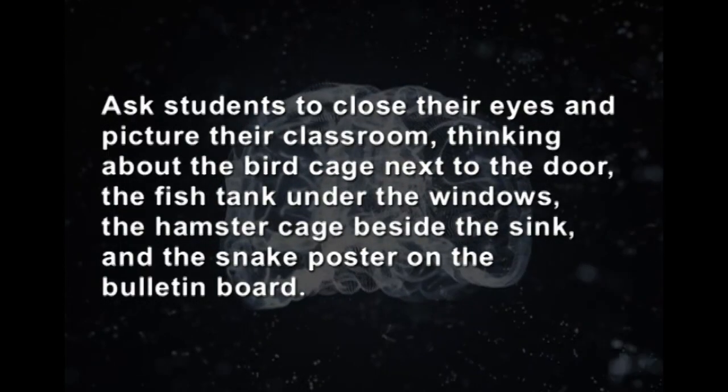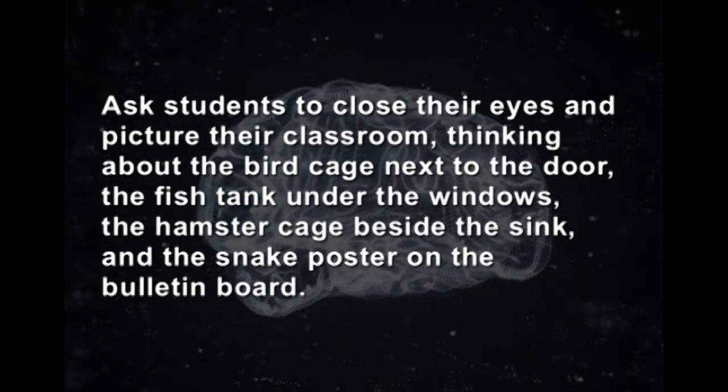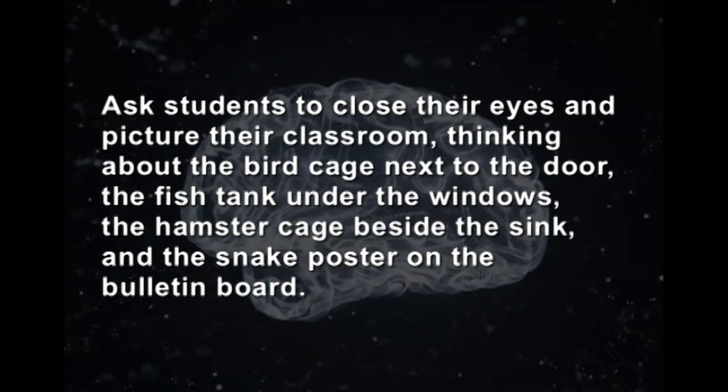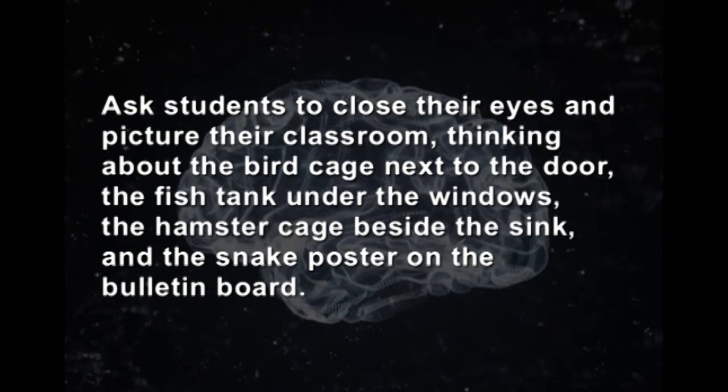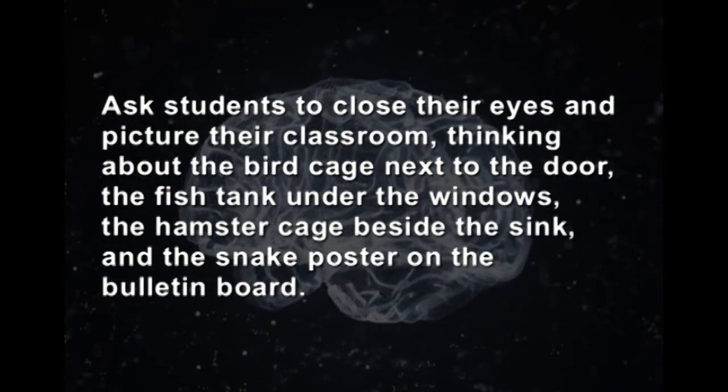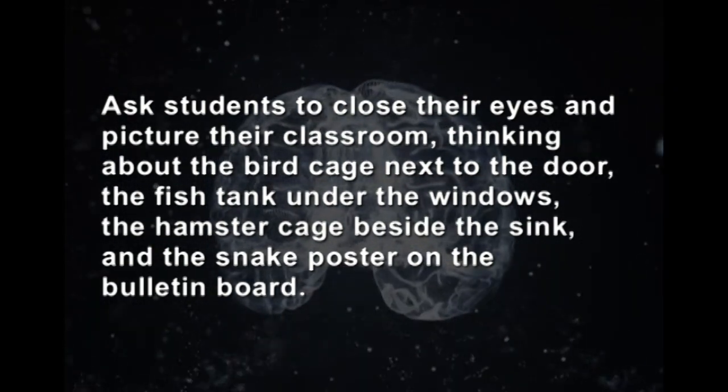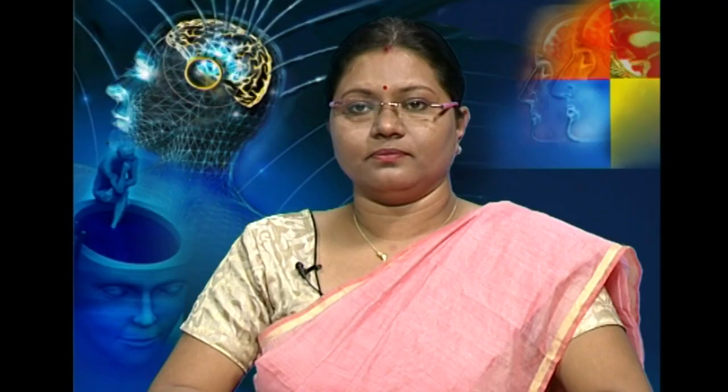For visualization, when a student has difficulty visualizing, the following techniques may be used. Ask the student to close their eyes and picture their classroom — thinking about the bird cage next to the door, the fish tank under the window, the hamster cage beside the sink, and the snake poster on the bulletin board. Then ask the students to open their eyes and write a list of animals for their science lab. This simple task helps them begin to visualize course material when needed.